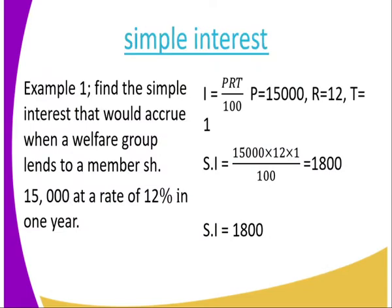We start by looking at examples. Example 1: Find the simple interest that would accrue when a welfare group borrows 15,000 at a rate of 12% for one year. The formula is Principal × Rate × Time divided by 100. Principal is 15,000, Rate is 12, Time is 1. So it is 15,000 × 12 × 1 ÷ 100, which equals 1,800. That is the simple interest.